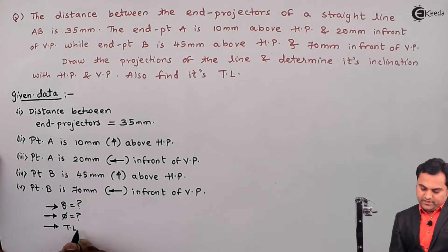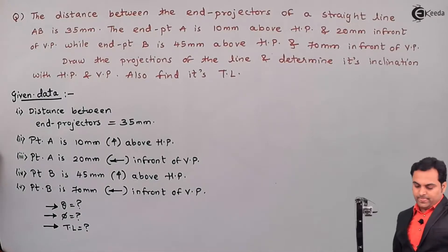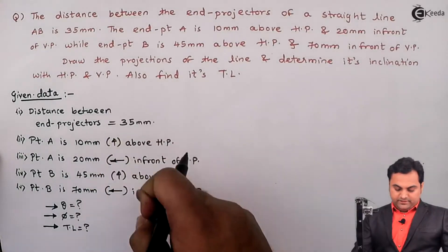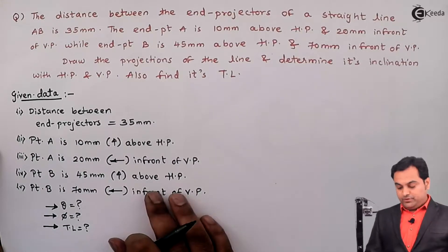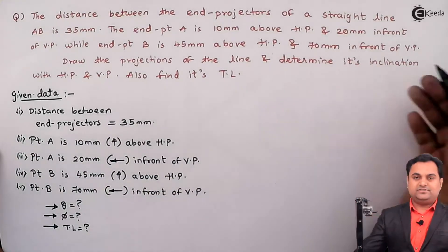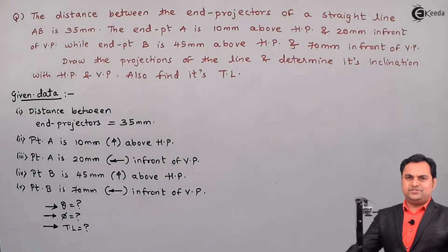And the TL which is true length is what we have to calculate here. So these are the parameters given and these are the five parameters available to us to solve the problem. So let us start with the solution to this question.